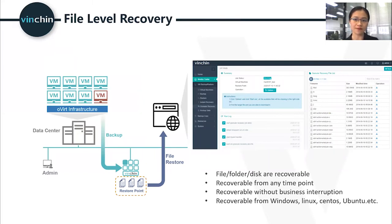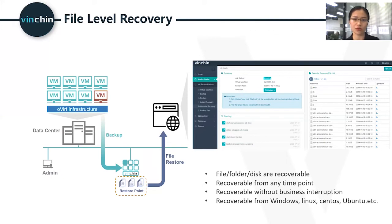When your oVirt VM size is very large, it may take one or two days to recover it, but you may only need some files in that VM. You can use file-level restore to quickly restore any file or folder with a few simple clicks without restoring the entire VM. Just create a granular restore job and start it. If you want to download files, all the files and folders in that VM will be restored and downloadable to your PC. Files, folders, or disks are recoverable from any time point. The entire restore process will not cause any business interruption. Files in most operating systems can be restored, including Windows, Linux, CentOS, Ubuntu, etc.